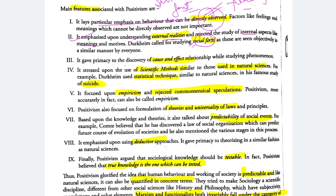Positivism stresses upon the use of scientific methods similar to those used in natural sciences. Durkheim used statistical techniques in his famous study of suicide. He focused upon empiricism and rejected common-sensical speculations, because positivism and common sense are totally opposite. Positivism believes in theories and universal laws. The predictability of social events — as in Karl Marx's prediction — is also an example of positivist technique. Positivism emphasizes the deductive approach, which is a top-down approach: first you create a hypothesis, then research to prove or falsify it.